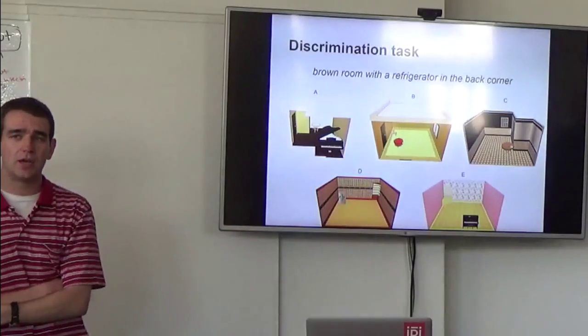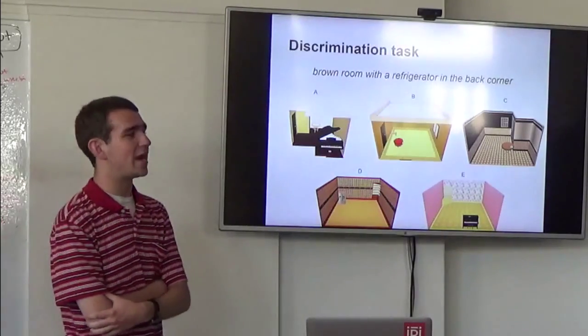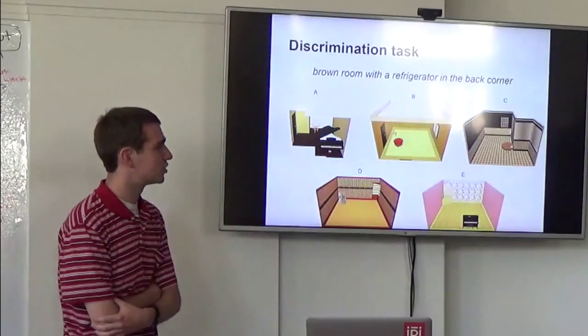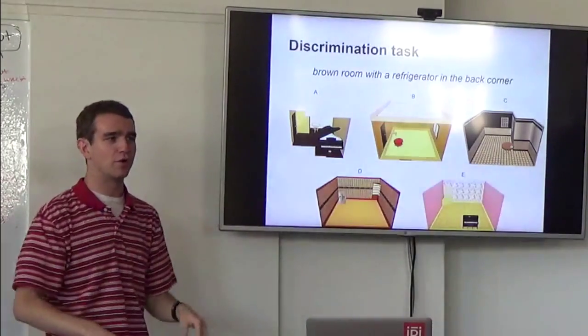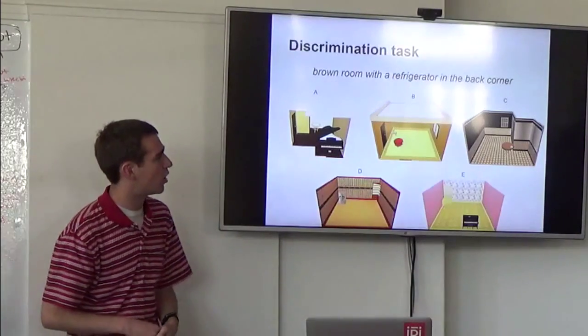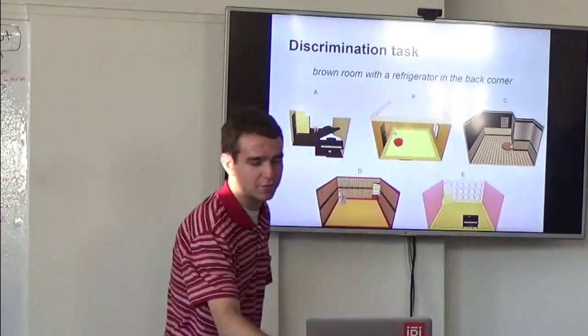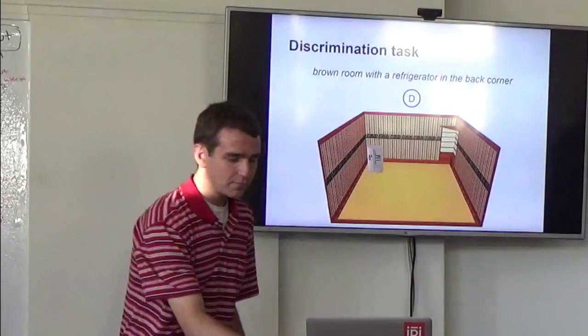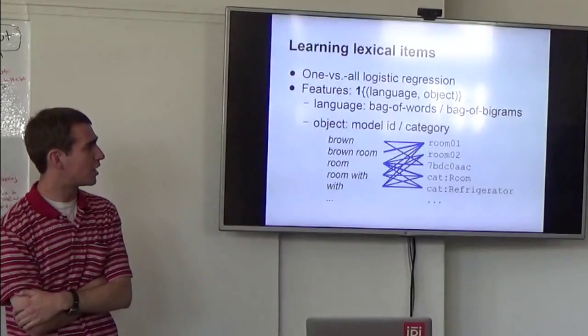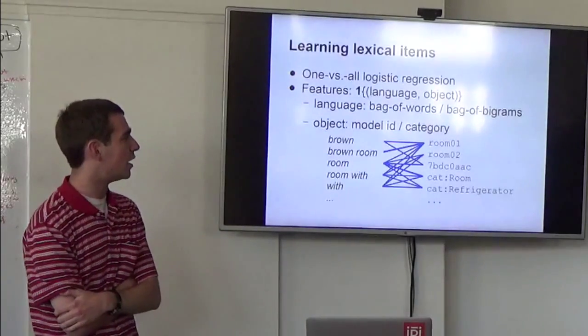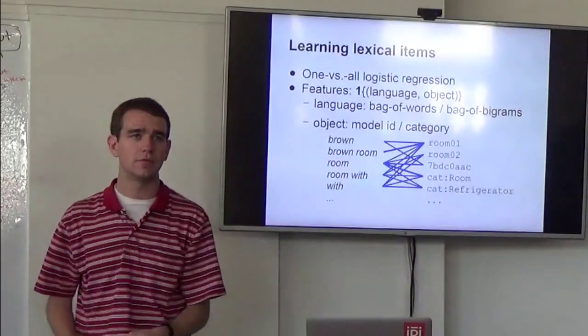So in order to learn from this data set, we set up a classification task. So the goal of this classification task, briefly, is to identify the scene that inspired a particular description, given a number of distractors. So we took each pair of Turker-built scene and then different Turker description of it. And then we threw in a number of random scenes drawn from the rest of the data set. And so the goal of our classifier that we're training here is to read this description, brown room with a refrigerator in the back corner. Look at all the scenes and decide that of these five scenes, only scene D is the one that matches that.